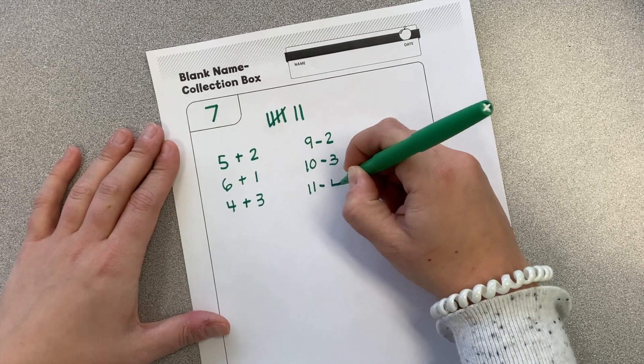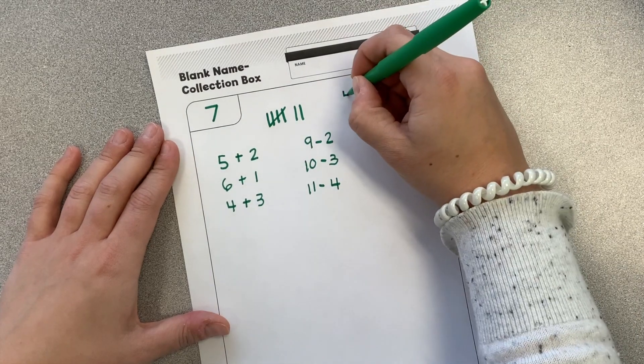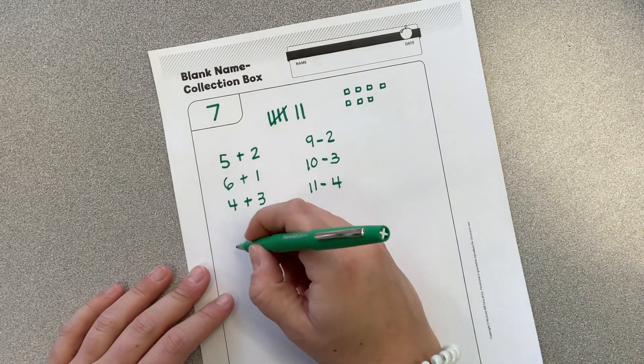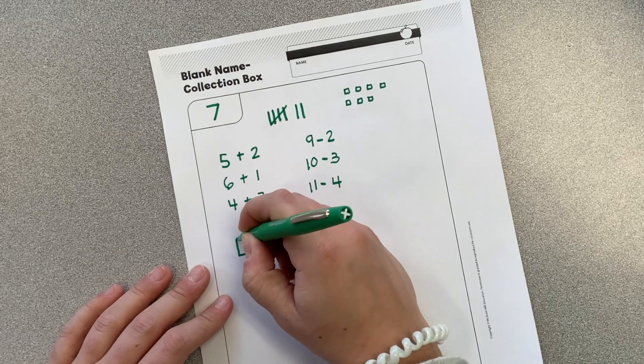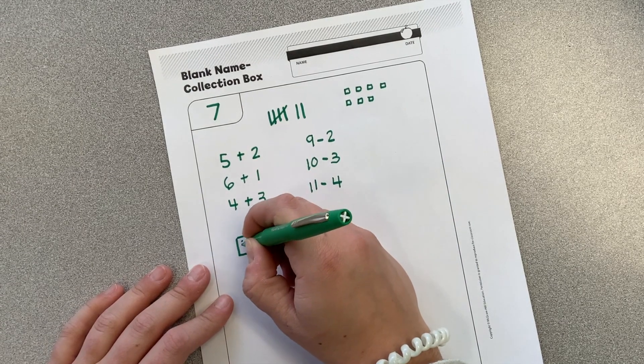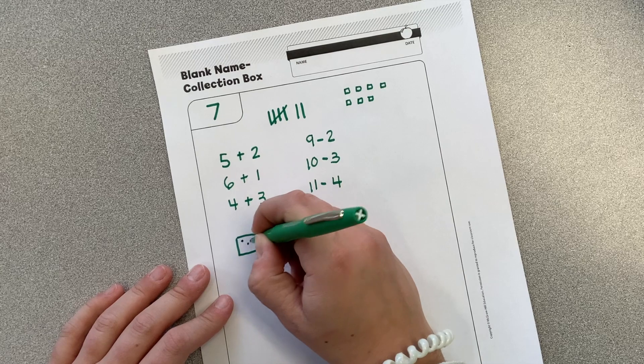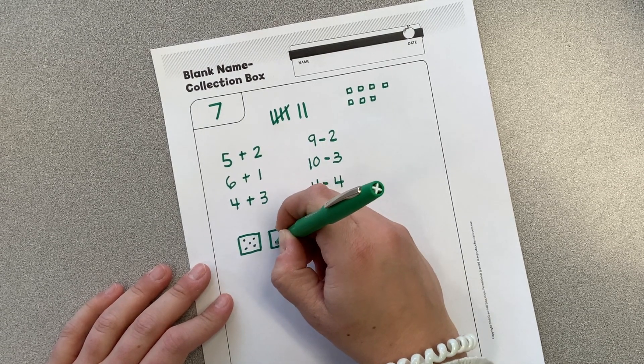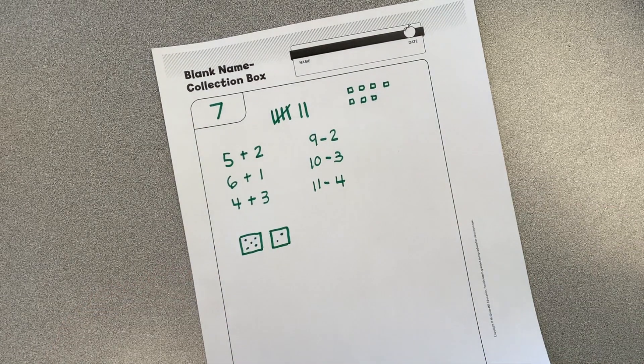I could keep going, but maybe I'm going to do it with place value blocks. One, two. If I roll a die, maybe I'll roll a five and a two. That would make seven.